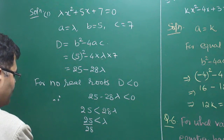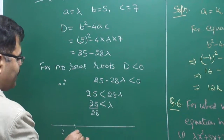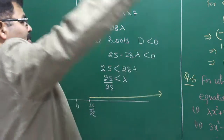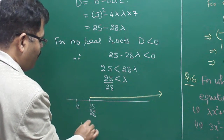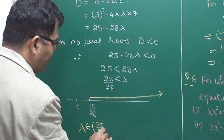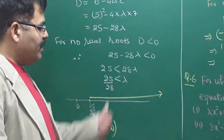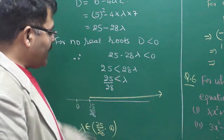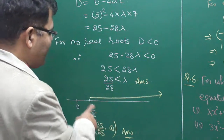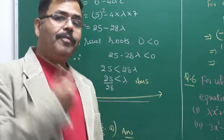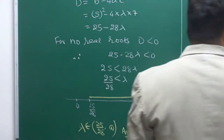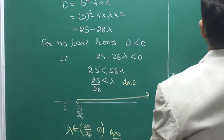On a number line, 25 by 28 is something less than 1. Lambda should be greater than 25 by 28, going till infinity. In interval notation, lambda belongs to the open interval from 25 by 28 to infinity. Any value of lambda greater than 25 by 28 means this equation has no real roots.